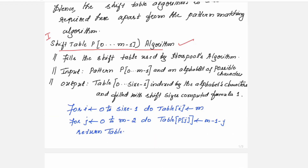In the shift table algorithm, the first three lines are comment lines. The first line states the purpose: it is going to fill the shift table entries, and this shift table will be used by the Horsepool algorithm. The second comment line states the input required, which is the pattern, and the output will be a table.